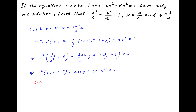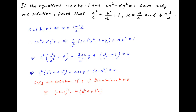Now, if this quadratic in y is to have only one solution, then its discriminant must be 0. The discriminant of the above quadratic equation is equal to minus 2bc whole squared minus 4 times, in brackets, a squared d plus b squared c, multiplied by, in brackets, c minus a squared, is equal to 0.